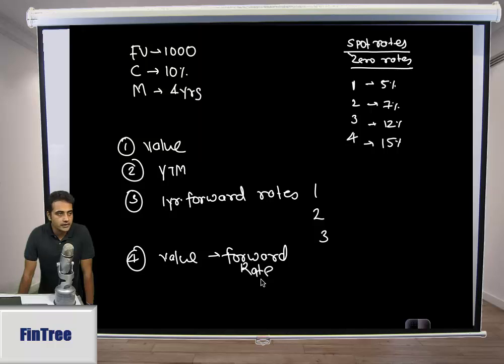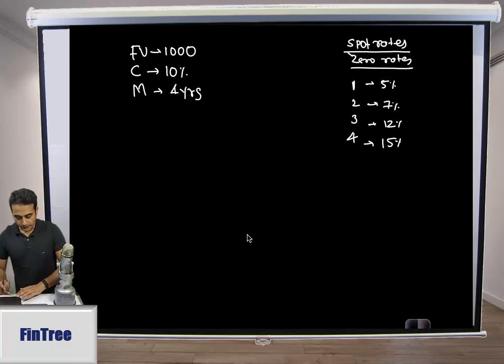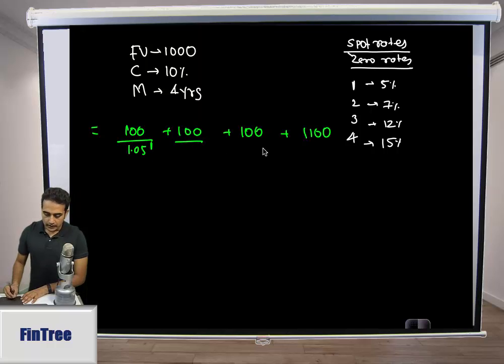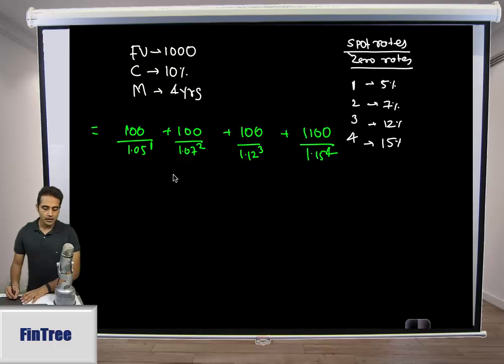Step 1: If you have spot rates, we'll do valuation of each cash flow using respective spot rates. We have four cash flows: 100, 100, 100, and 1100. The first cash flow discounted for one year using first year spot rate, so that's 1.05 to the 1, then 1.07 to the 2, 1.12 to the 3, and 1.15 to the 4. The value comes out to 882.68.